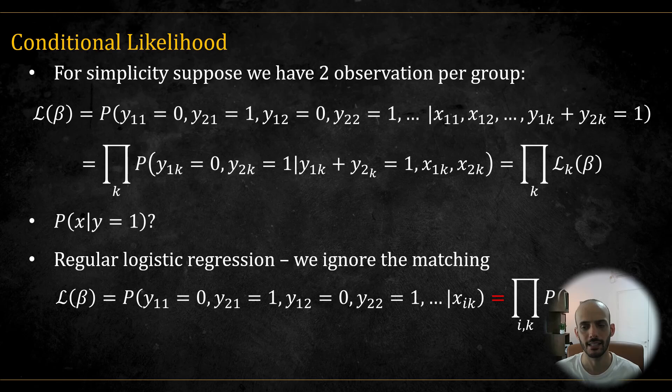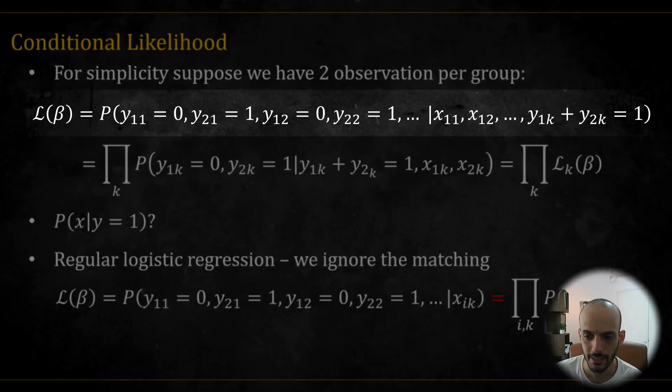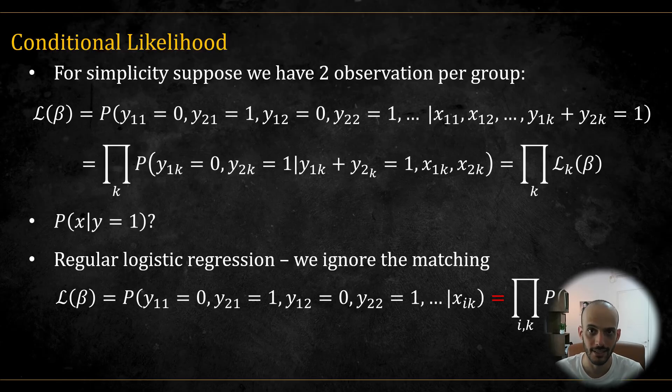So let's derive the likelihood in the matched case control scenario. For simplicity, assume we have only two observations per group. The likelihood is the probability of observing our data given some specific model parameters, the betas. In other words, we are asking what is the probability of getting the observed cases and controls given the individual x values and given that the sum of each pair must be exactly equal to one because this is how the study was designed.